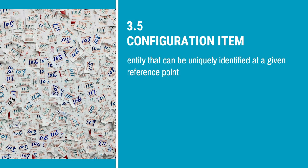Let's talk about configuration management. I would say that a software project usually has more configuration items to control than all documents together in a full development project. The definition of a configuration item is an entity that can be uniquely identified at a given reference point. In the software domain, a given reference point can be down to hours or even minutes — very different from a document, which is typically released with a signature at a much lower pace.